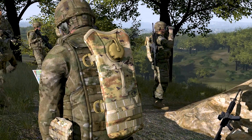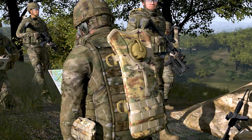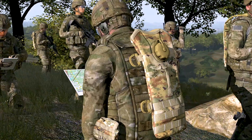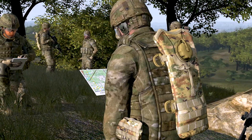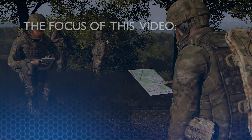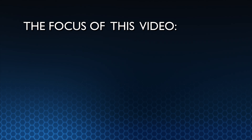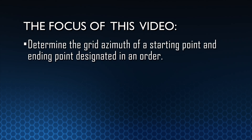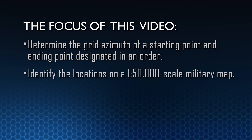As a member of a squad or team, you will often receive tactical orders to move to a new location. The focus of this video is to help you determine the grid azimuth of a starting point and ending point designated in an order and identify the locations on a 1 to 50,000 scale military map.